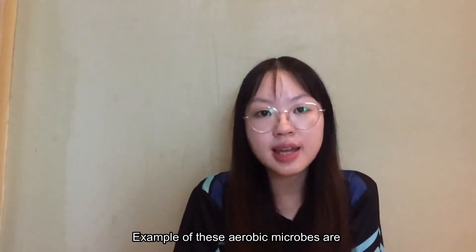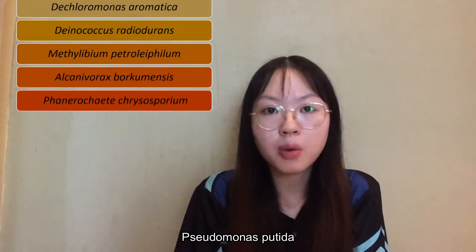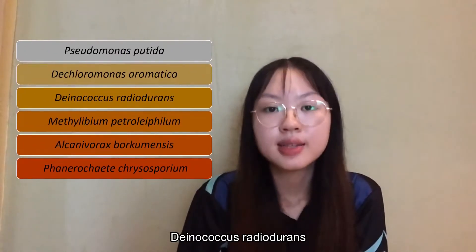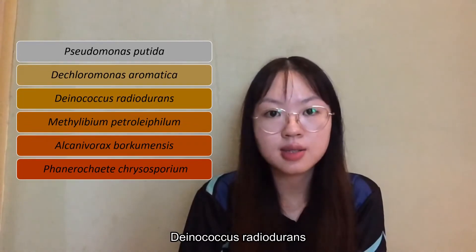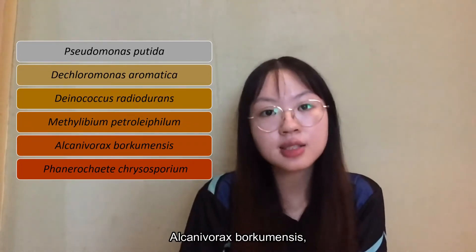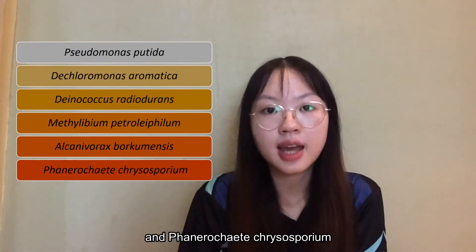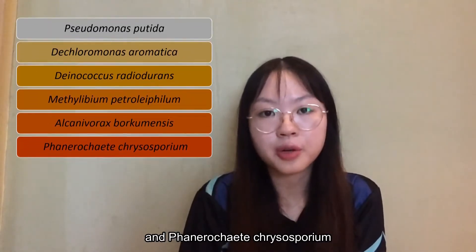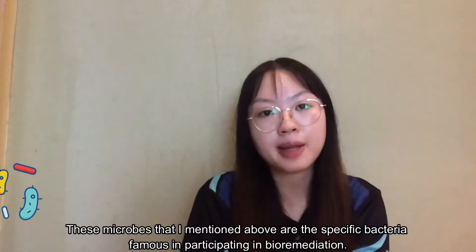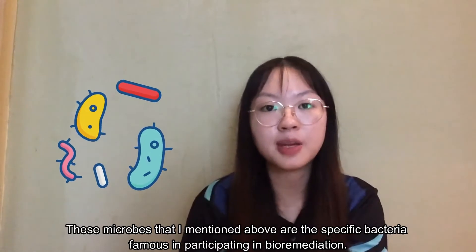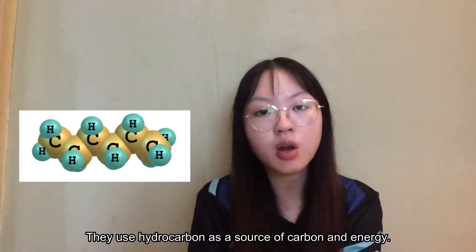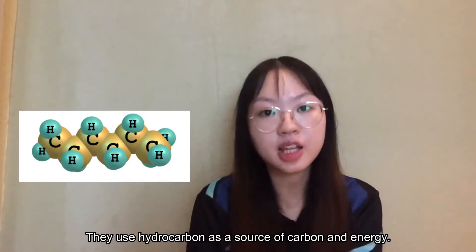Examples of these aerobic microbes are Pseudomonas putida, Dechloromonas aromatica, Deinococcus radiodurans, Methylibium petroleiphilum, Alcanivorax borkumensis, and Phanerochaete chrysosporium. These microbes are specific bacteria famous for participating in bioremediation that use hydrocarbon as a source of carbon and energy.